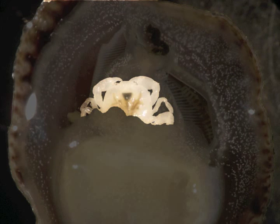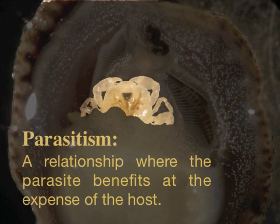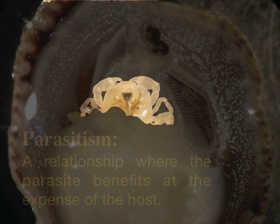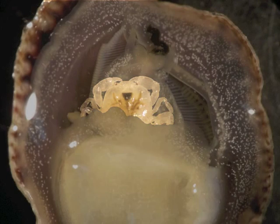In addition to stealing food, the crab prevents the snail from laying eggs and reproducing, most likely because it occupies the incubation space for the eggs.